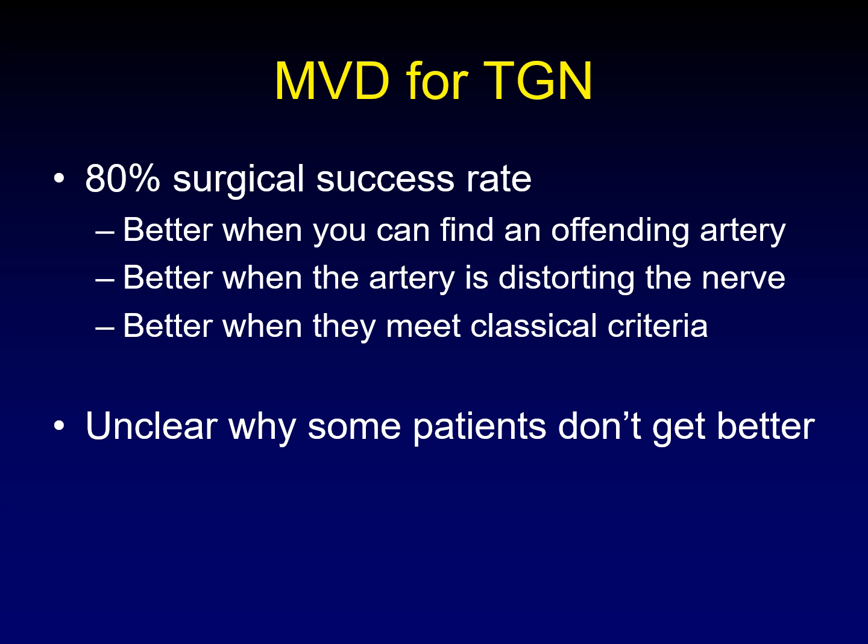First, you have to understand a few things about microvascular decompression for trigeminal neuralgia. This surgical procedure has an 80% success rate for classical trigeminal neuralgia, but that success rate is better when you can find an offending artery that is compressing the nerve. It's better when the artery is shown to be distorting the nerve radiologically, not just touching it. And these patients do better when they meet the classical criteria for classical trigeminal neuralgia.